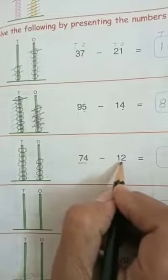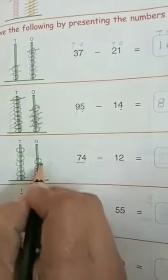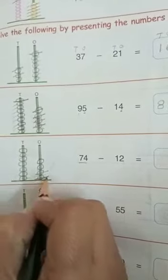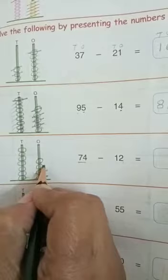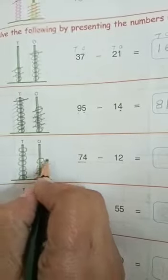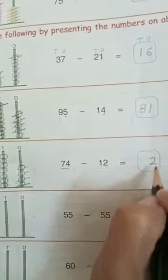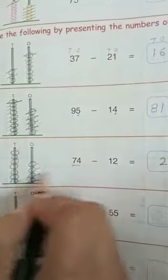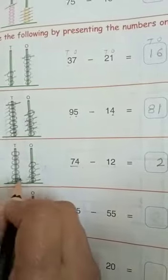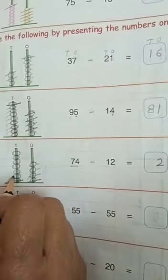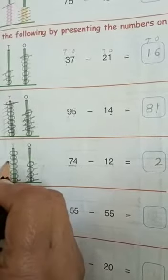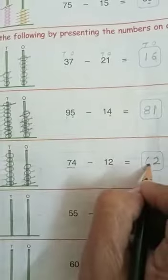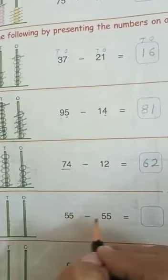Now we have to take away 12. Take away 2 ones: 1, 2. How many 1's are left? 1, 2. And 1 ten from 7 tens. How many 10's are left? 1, 2, 3, 4, 5, 6. Answer is 62.